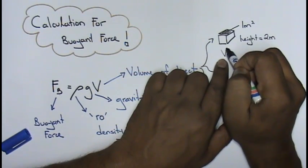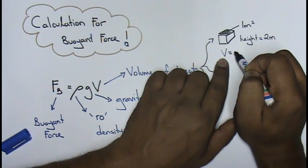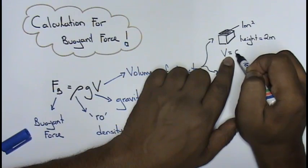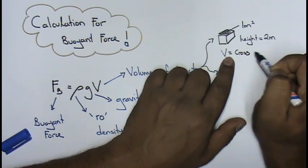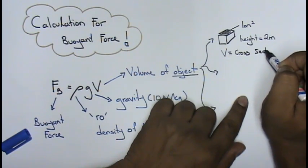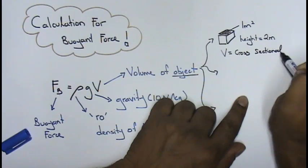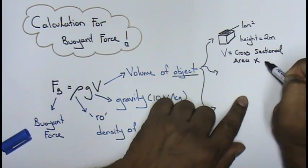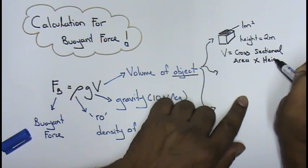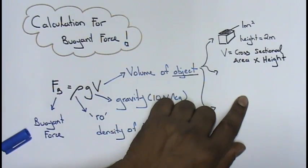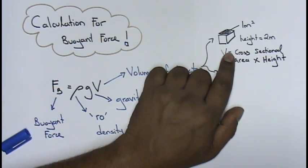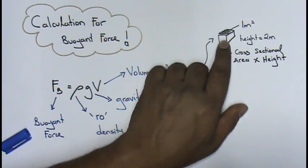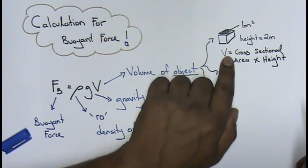Now the volume for object of this will be V equals to, remember, cross-sectional area times height. So for this one over here, remember your cross-sectional area times height.